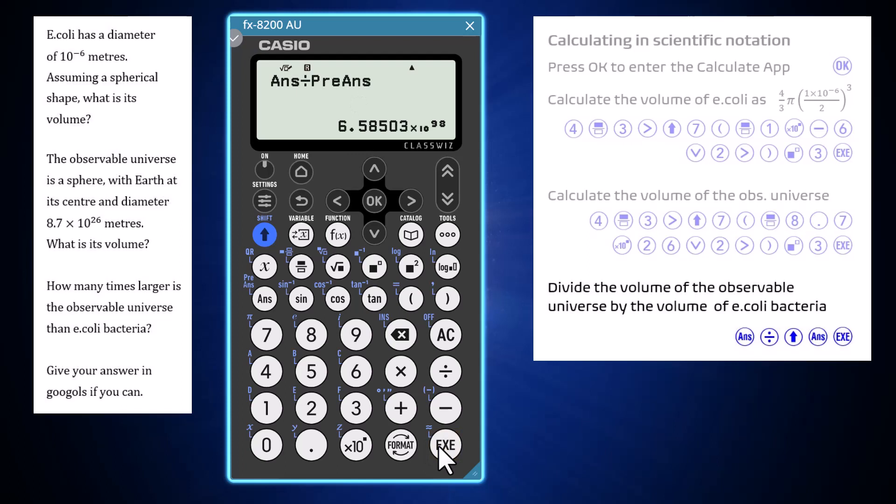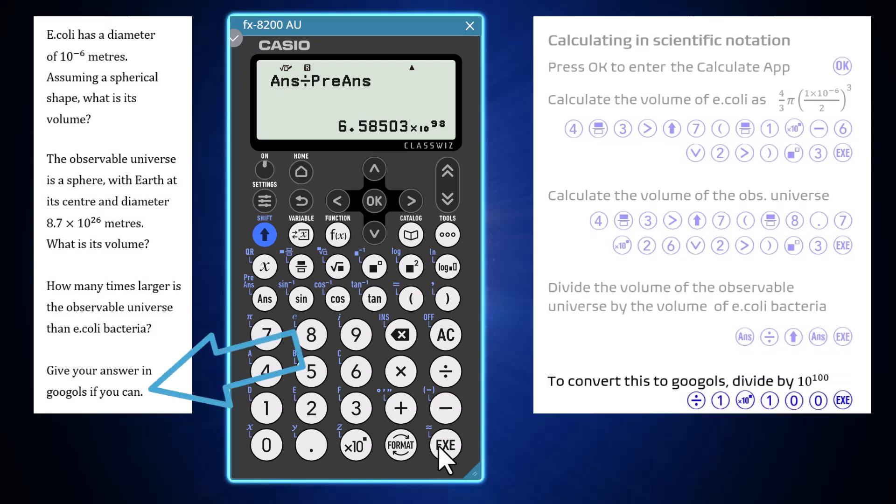So the observable universe is 6.6 times 10 to the power of 98 times larger than E. coli bacteria. One way to convert this answer to googols is to divide it by 1 times 10 to the power of 100 using the scientific notation input key once more.